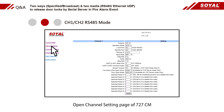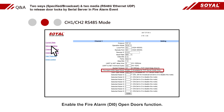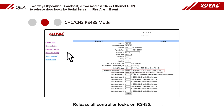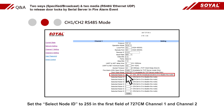Open channel 3 settings page of 727CN. Enable the fire alarm open door function to release all controller locks on RS-485. Set the select node ID to 255 in the first field of 727CN, channel 1 and channel 2.